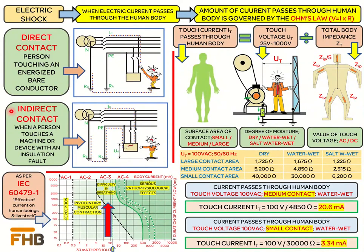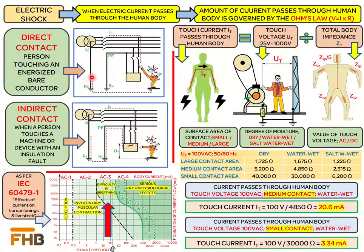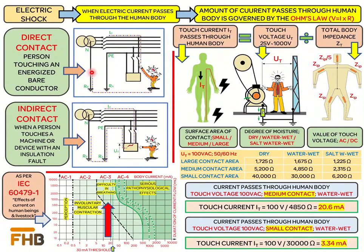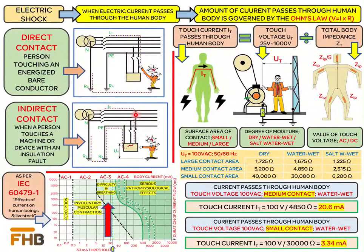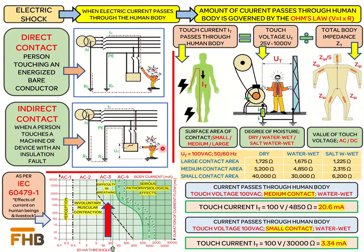Direct contact happens when a person touches a bare live conductor and electric current passes through the body, as shown in the picture. Indirect contact happens when a person touches an electrical machine or device with an insulation fault and the leakage current passes through the human body.